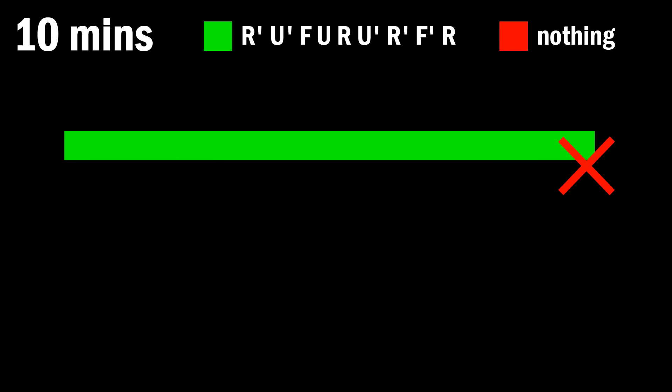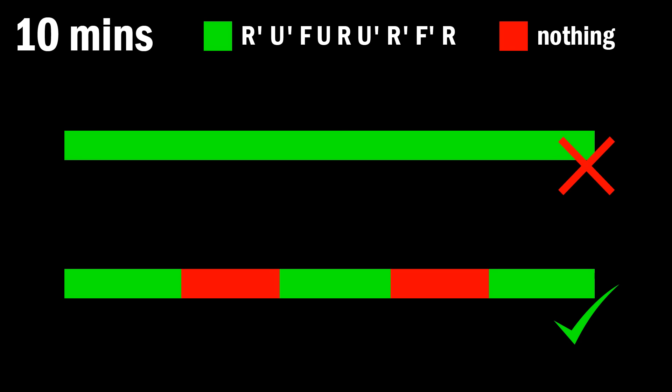So if you have 10 minutes to practice an algorithm, I guarantee you the worst thing you can do is just do the algorithm for 10 minutes straight. If you practice it until you're good, stop for a while, and go again and repeat, then you'll also be training your recall, which makes your algorithm smoother in the future.